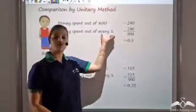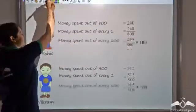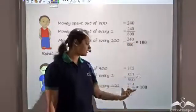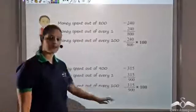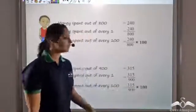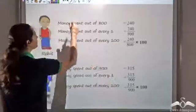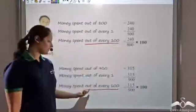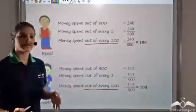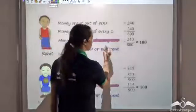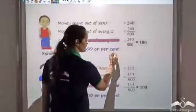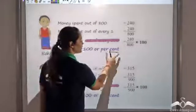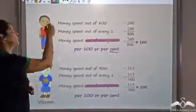So instead of finding for a unit which is 1, we can find it for 100. We can find the money spent for every 100 by multiplying by 100. So that gives the money spent for every 100. Similarly for Vikram, it would be 315 divided by 900, multiplied by 100. This is money spent per 100, which we can say 'per cent' — because 'cent' also means 100. So this comparison which we find per 100, or per cent, is called comparison by percentage.